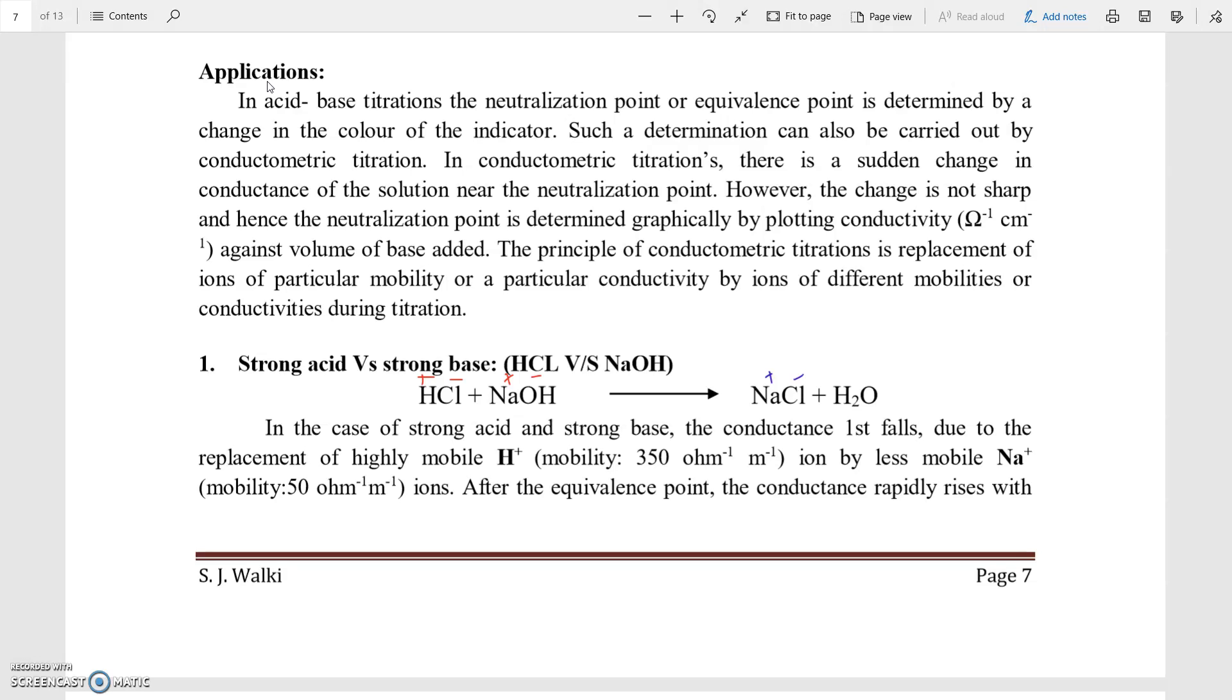Such titrations also can be determined by using the conductometric method. In the conductometric method, end point is obtained by the replacement of one ion of particular mobility with another ion which is having different mobility. That means one particular ion having the particular conductivity, that ion is replaced by another ion which is having different conductivity.